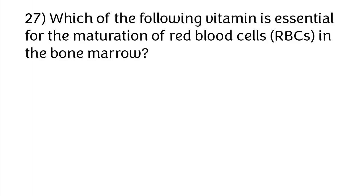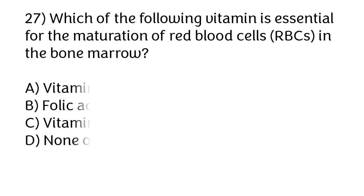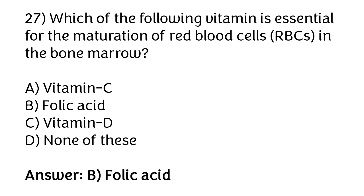Which of the following vitamins is essential for the maturation of red blood cells (RBCs) in the bone marrow? Options: vitamin C, folic acid, vitamin D, none of these. The correct answer is option B — folic acid is essential for the maturation of RBCs in the bone marrow.